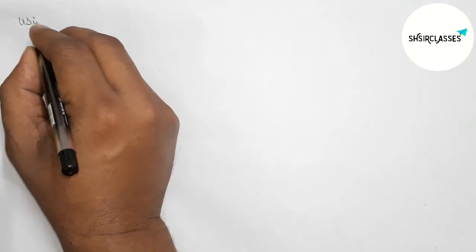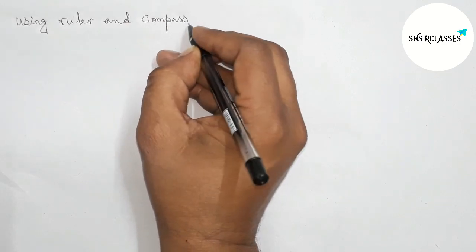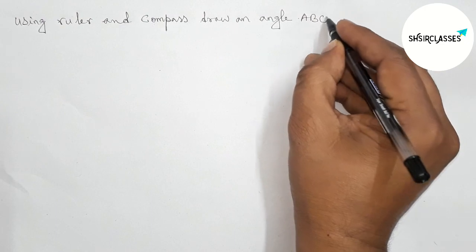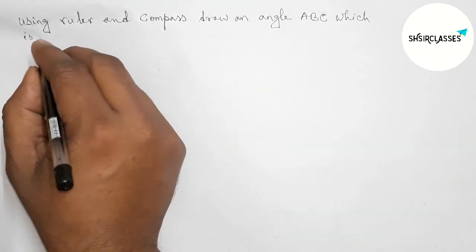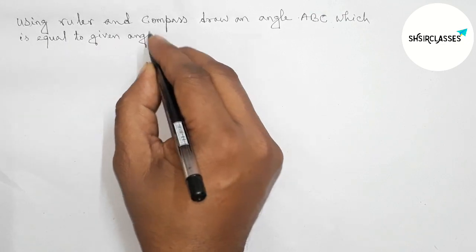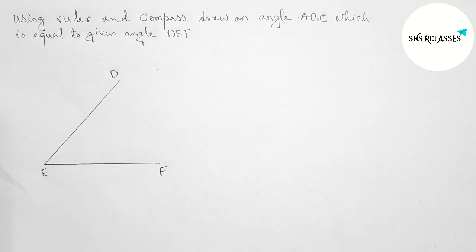Hi everyone, welcome to SIS Share Classes. Today in this video, using ruler and compass, draw an angle ABC which is equal to given angle DEF in easy way. So let's start the video. Here, given angle DEF.